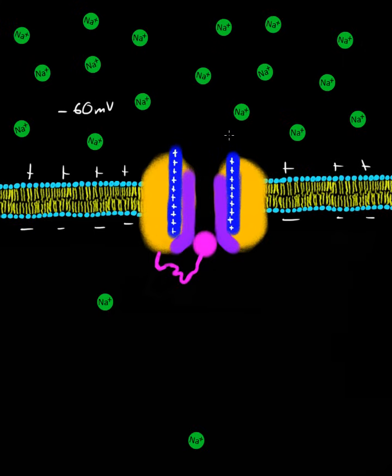And when that occurs, the positive charges push on the blue rods, or the voltage sensor rods, downwards. And as the blue rods go down, and remember the negative charges are also pulling on them, the activation gates, which are these purple parts, begin to close.